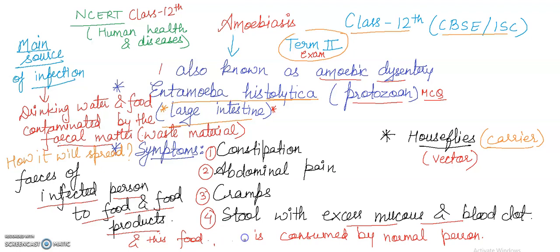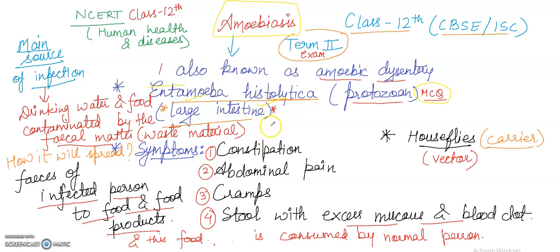Amoebiasis is caused by a protozoan, and the name of that protozoan is Entamoeba histolytica. This is an important point — in MCQ-type questions they may ask what the causative agent for amoebiasis is, so you must remember: the causative agent is Entamoeba histolytica.